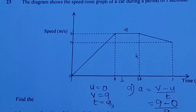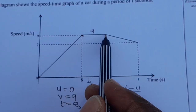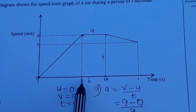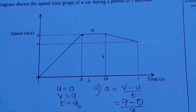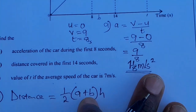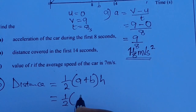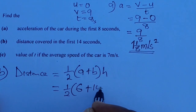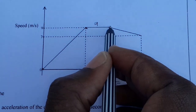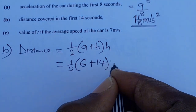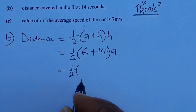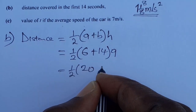So we say distance equals half times (A plus B) times H. To find A: the distance from here to there is 14 minus 8, which is 6. So A is 6. B is 14, and the height from here to there is 9. So we have half times (6 plus 14) times 9.